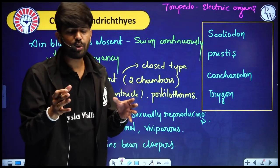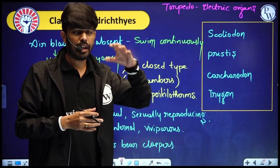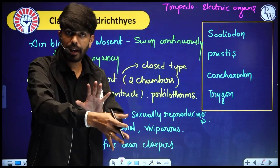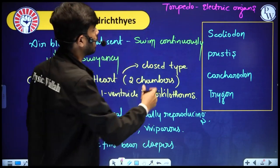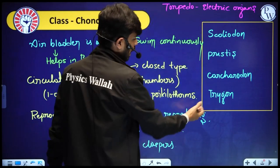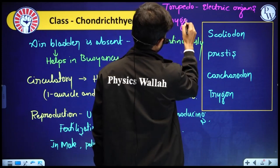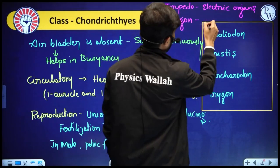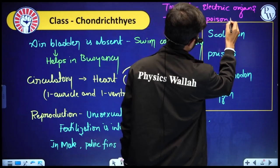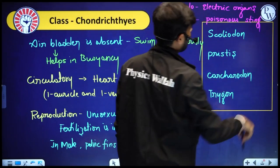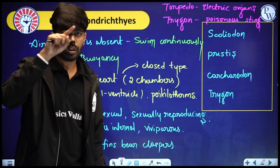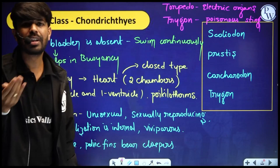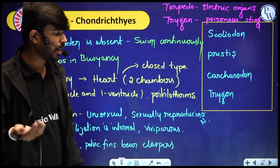Trigon (stingray) has a poisonous sting that can kill prey or predator. Examples of Chondrichthyes: Scoliodon (dogfish), sawfish (Pristis), great white shark (Carcharodon), and Trigon (stingray). These are the common examples you should remember. Air bladder is absent, so they swim continuously to avoid sinking. Circulatory system is closed type with a two-chambered myogenic heart; they are poikilotherms.